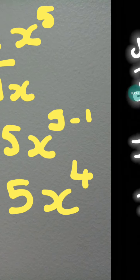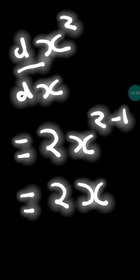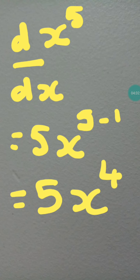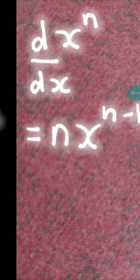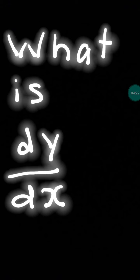Coming back to the formula, the n which is the power of x can be a positive number, a negative number, a fraction, a decimal — it can be anything. Here we solved with n equals 2 and n equals 5. Just apply the formula for any other number in place of n. Once again: what is the meaning of dy by dx? It is the change in the value of y when there is a change in the value of x.